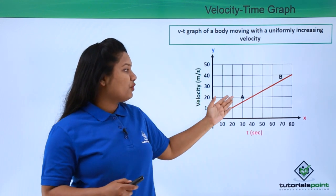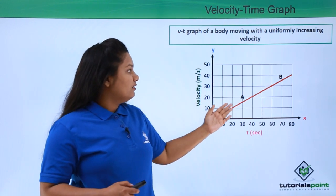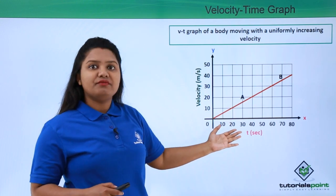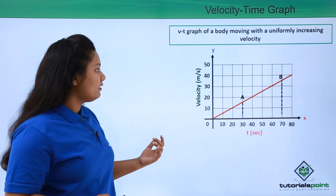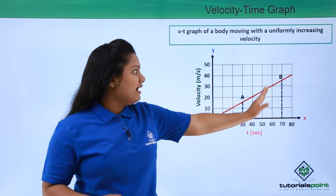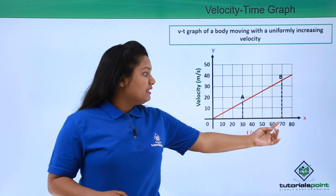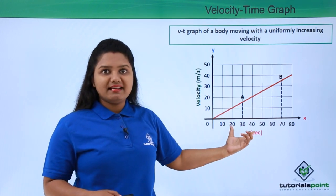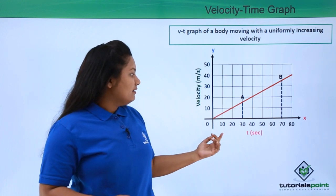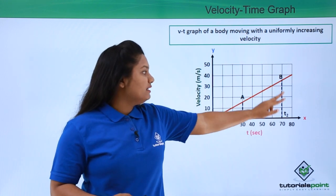That is, what is the velocity and time at point A and at point B. In order to do that, we need to draw two parallel lines from A and B perpendicular to the x-axis, in order to find the value of time. The perpendicular from A meets the x-axis at one point and the perpendicular from B meets the x-axis at another point. These points give us the time values, so let us say the time at point A is t1 and at point B is t2.